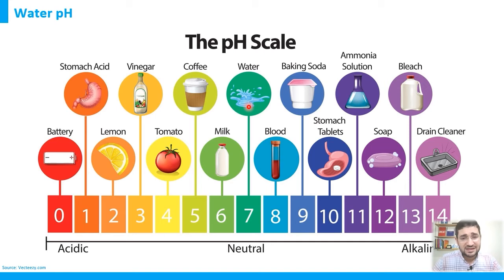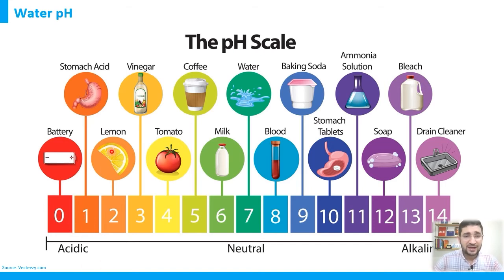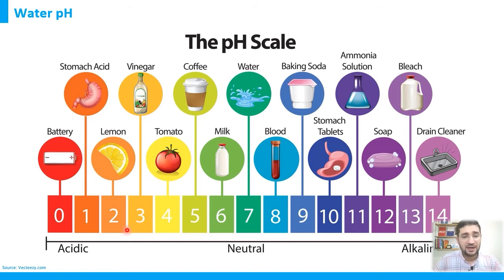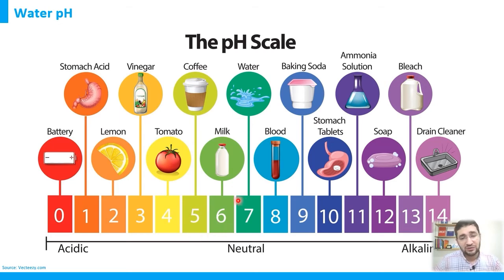On the acidic side: battery acid (sulfuric acid) has a pH close to 0; stomach acid is around pH 1; lemon juice is approximately pH 2; vinegar is between 2 and 3; tomato is between 4 and 5; and coffee is slightly acidic around pH 5. Milk has a pH close to 6.